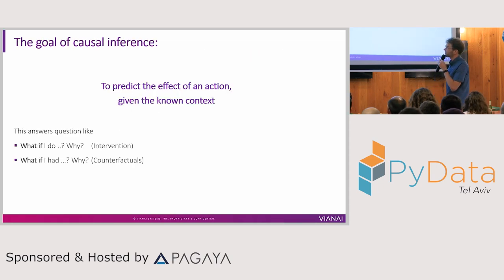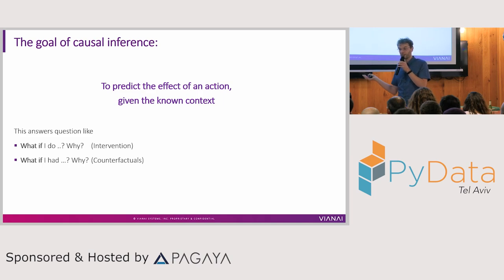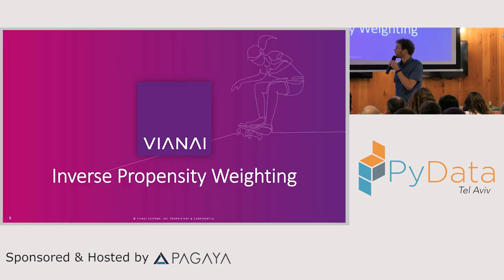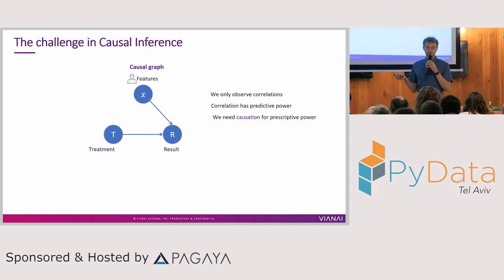The goal of causal inference is to predict the effect of an action given a known context. In short, you can answer questions like: if I do X, what will happen and why? Or looking at old data: if I had done something else in the past, would I have gotten a different result? There are different techniques to solve this, and the one I will cover today is inverse propensity weighting. But first, I need to explain what is actually difficult about causal inference.